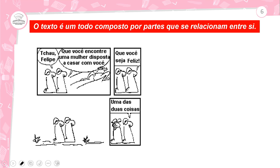O texto é um todo composto por partes que se relacionam entre si. O que isso significa? Aqui temos o gênero textual tirinha, e você vai observar que tem várias partes — esse texto tem uma sequência: tem início, meio e fim.